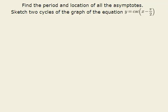In this problem, we are asked to find the period and location of the asymptotes and graph two cycles of the function y = csc(x - π/2).